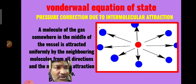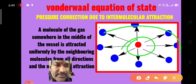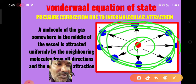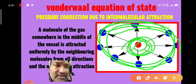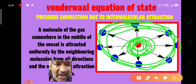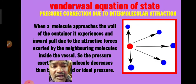At high pressures, the red color molecule in the bulk of the container is attracted by other molecules equally in all directions, so the net force acting on this middle molecule is zero. But the situation is different at the walls of the container. The molecule near the wall is attracted by other molecules only on one side — the other side has no gas molecules — so this molecule experiences an inward pull.